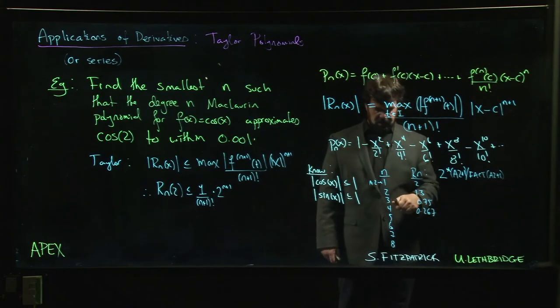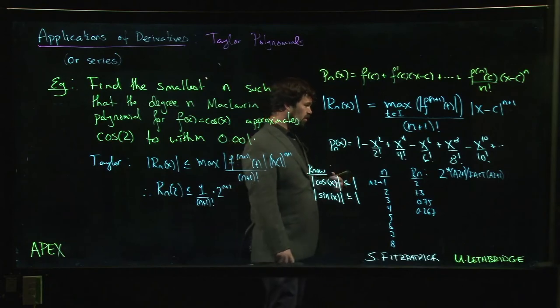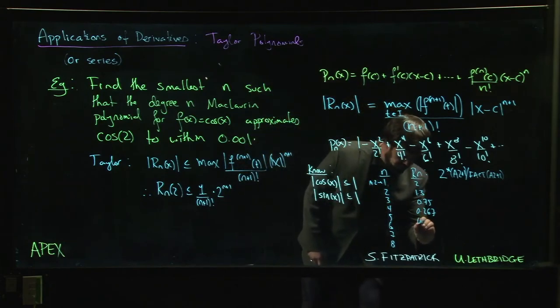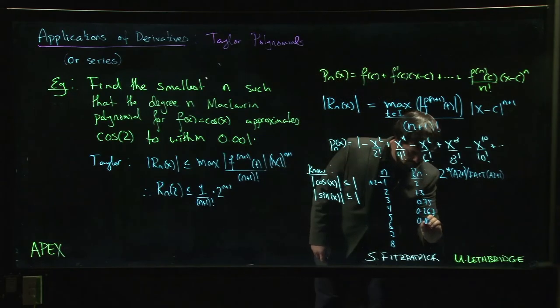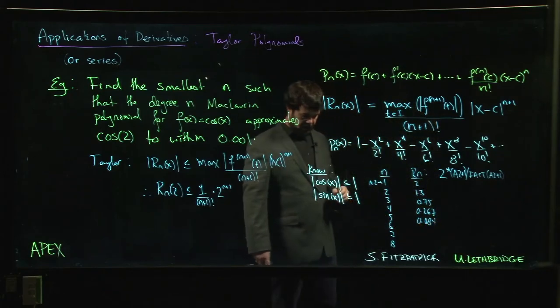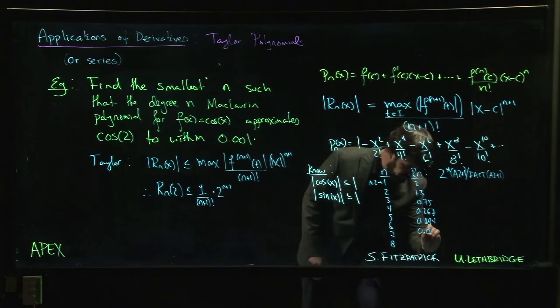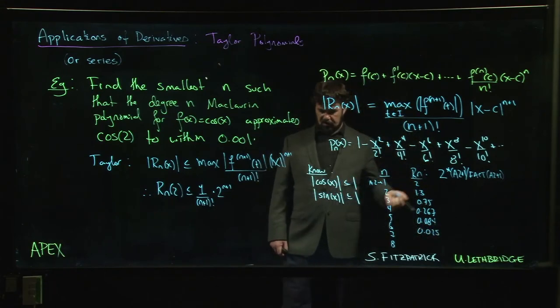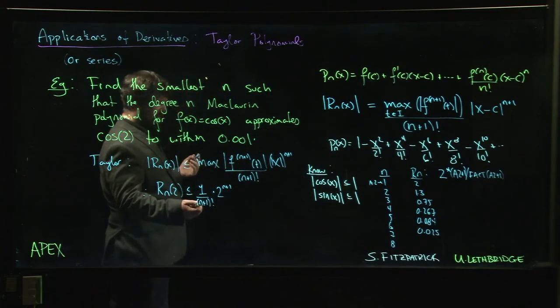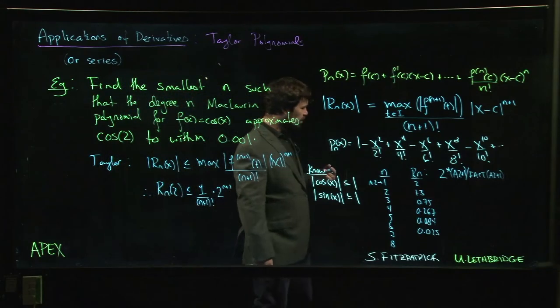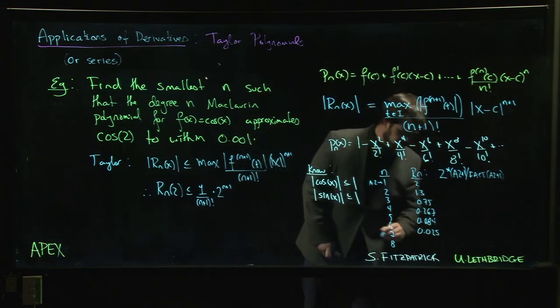You keep working your way down. You go n equals 4: 32 over 5 factorial, so 32 over 120, and you get about 0.267. And then you go to 5, so 5 plus 1 is 6: 64 over 6 factorial, so 64 over 720, and you get something like 0.084, getting better. So you keep going. For n equals 6, you get 0.025. For n equals 6 plus 1, you get 2 to the 7, so we're at 128. 7 factorial is like 5040.